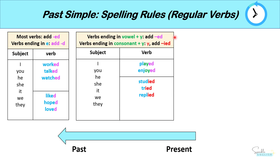The next rule is that verbs that end in a vowel plus Y, we add ED. So for example, play becomes played, because this verb ends in a vowel plus Y. Or enjoy becomes enjoyed, because again enjoy ends in a vowel plus Y. So we add ED.